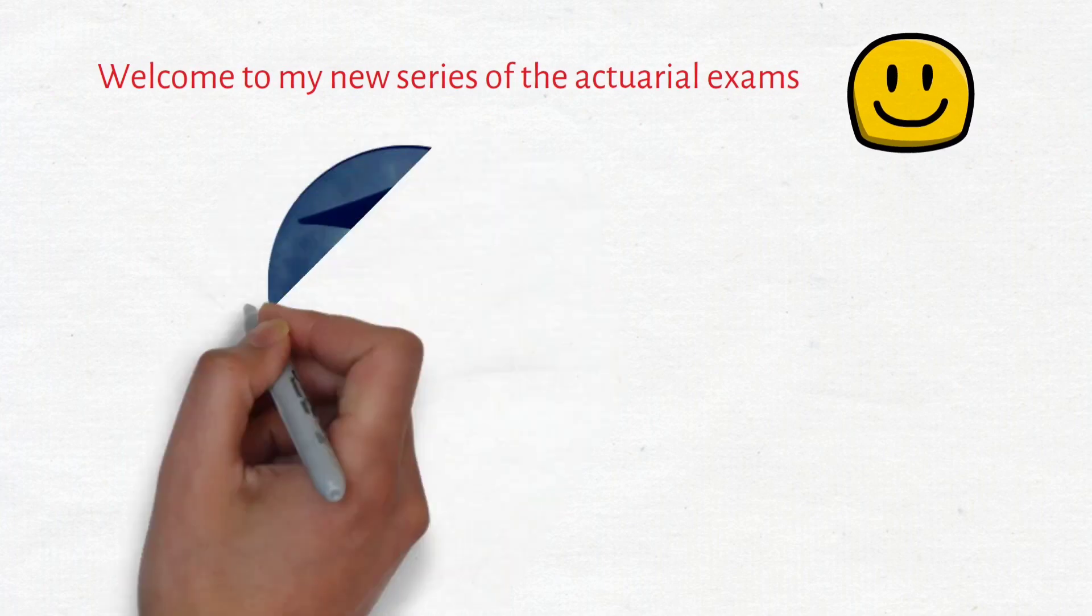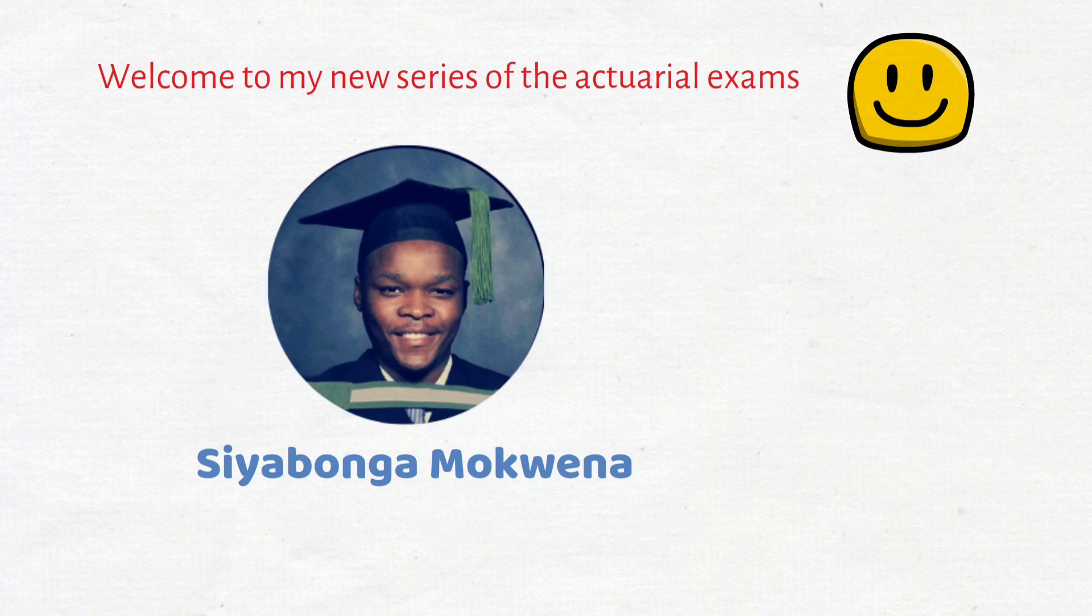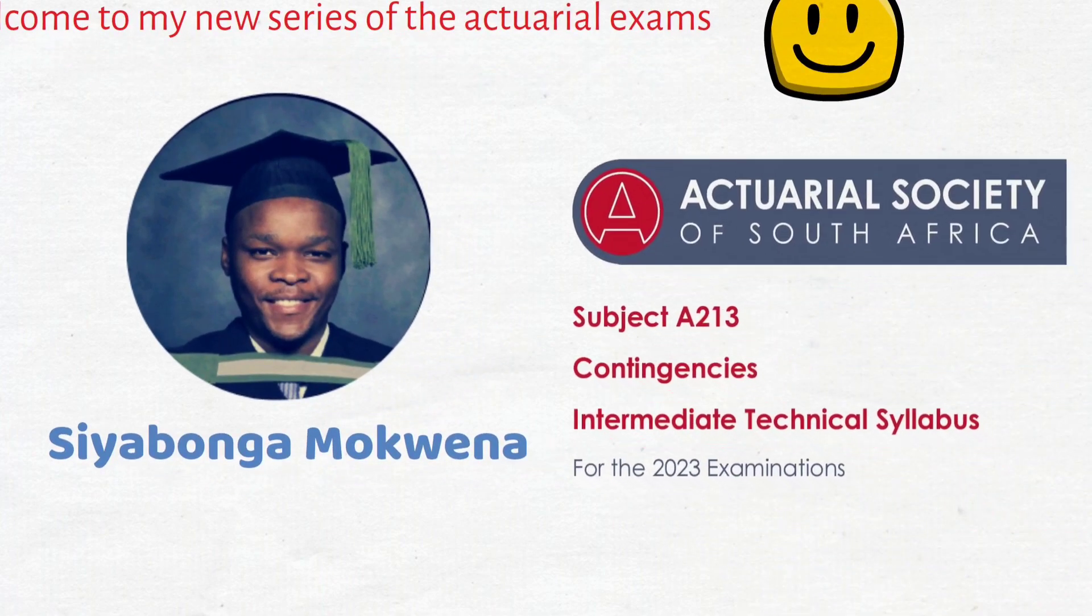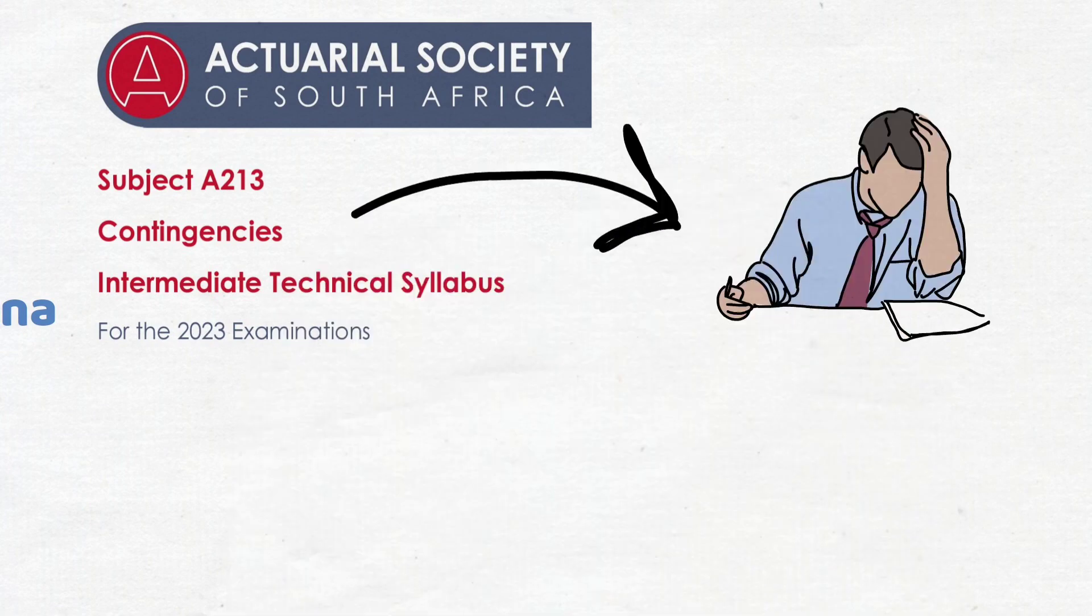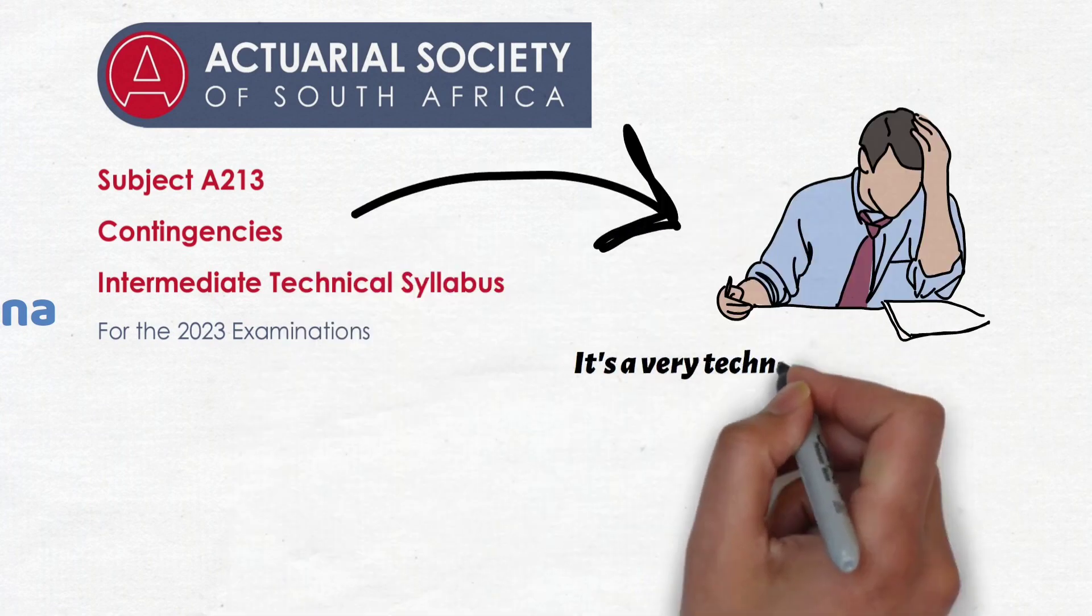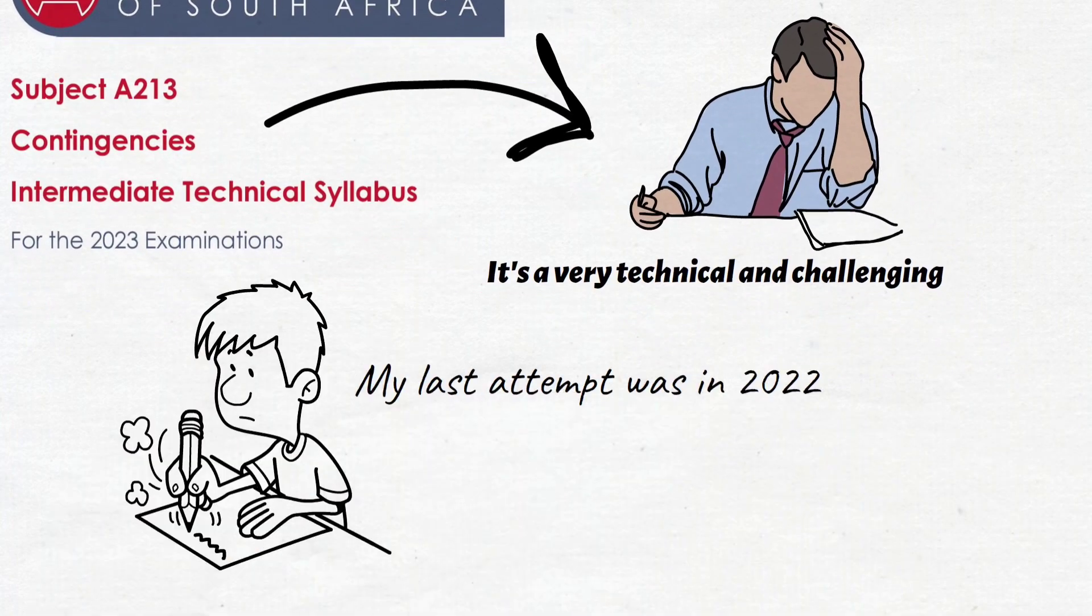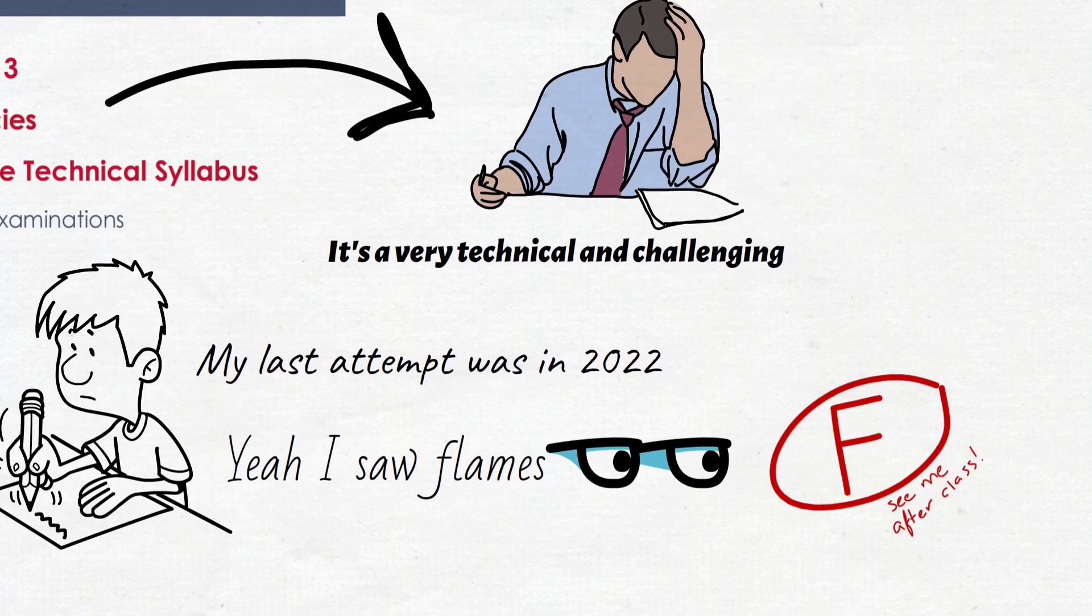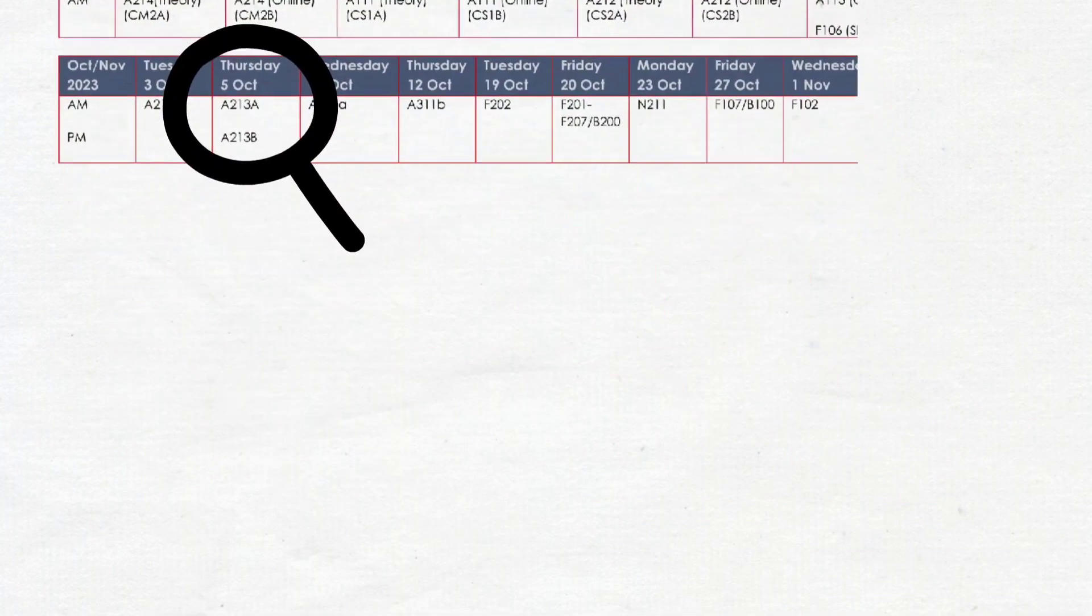Hello everyone, welcome to my new series on the actuarial exams. If you're new to my channel, check out my other series for Subject 821 Financial Maths. In this series we'll be going through the content of Subject 823, which is called Contingencies. It's a very technical subject and very challenging at the same time. I've written it before in the first session of 2022 and unfortunately it didn't go well, so I'm doing this series in preparation for my next attempt this coming session in October. Hopefully it will go well this time.